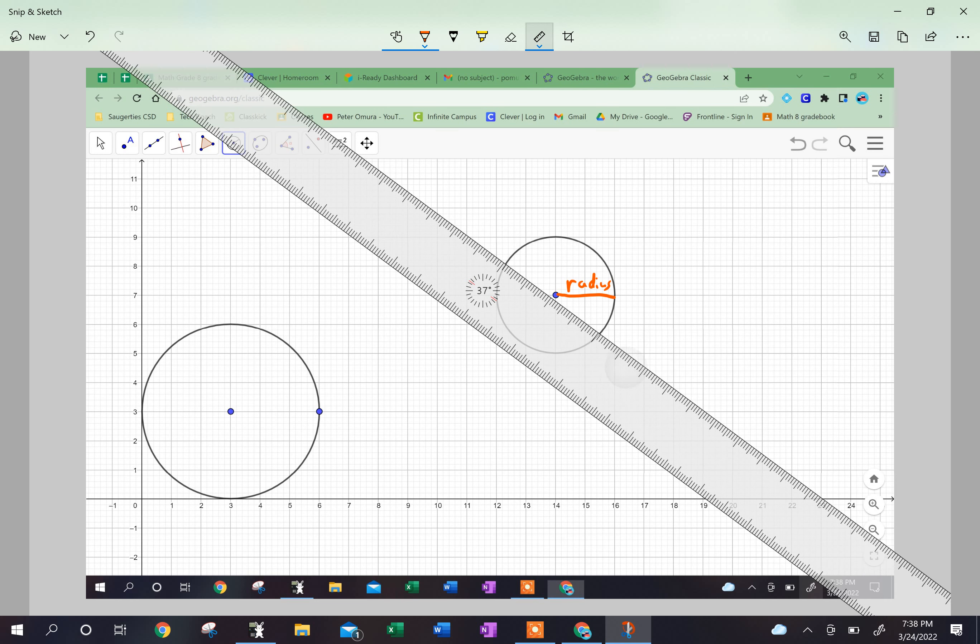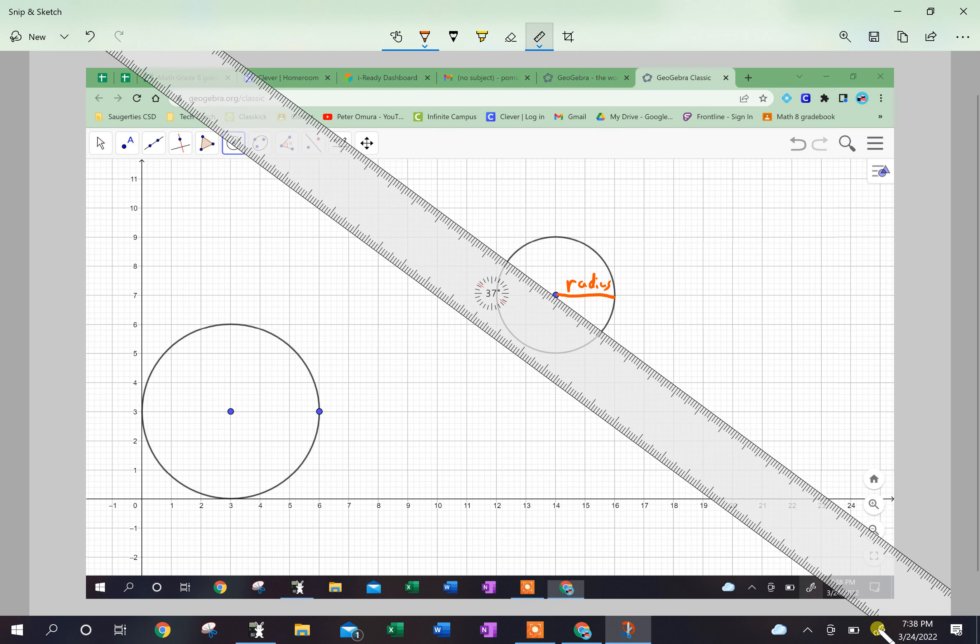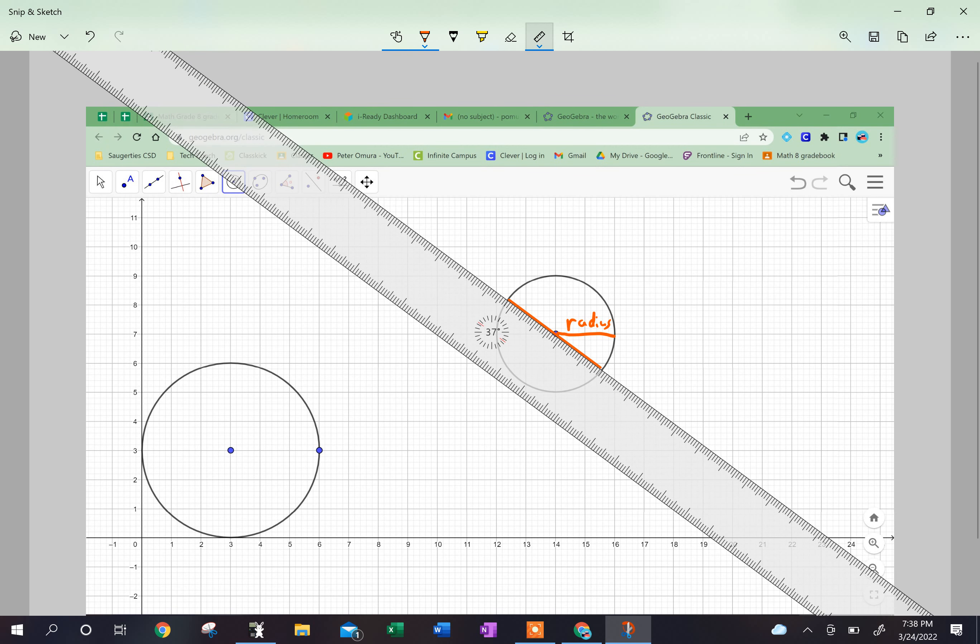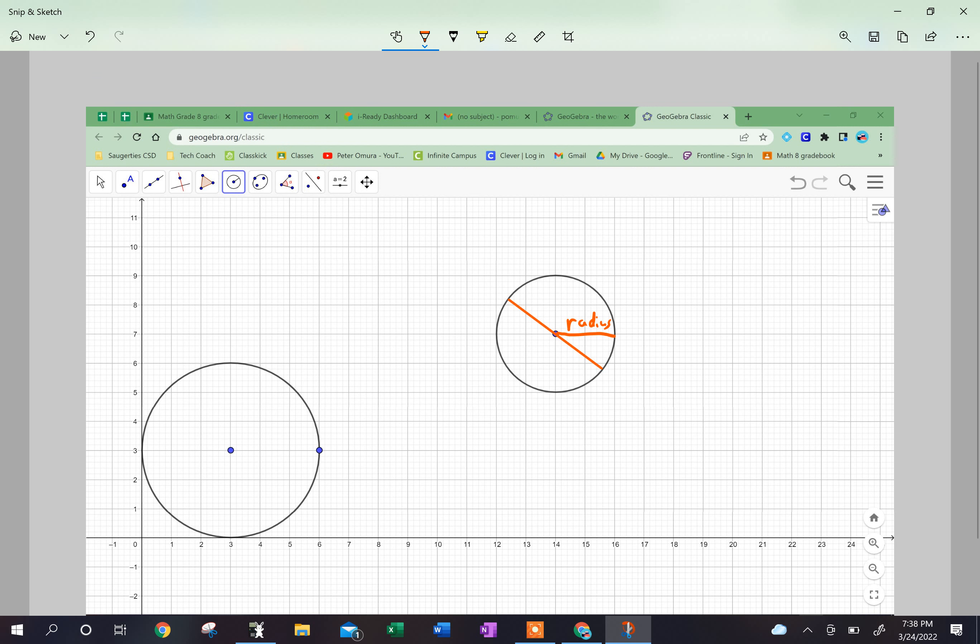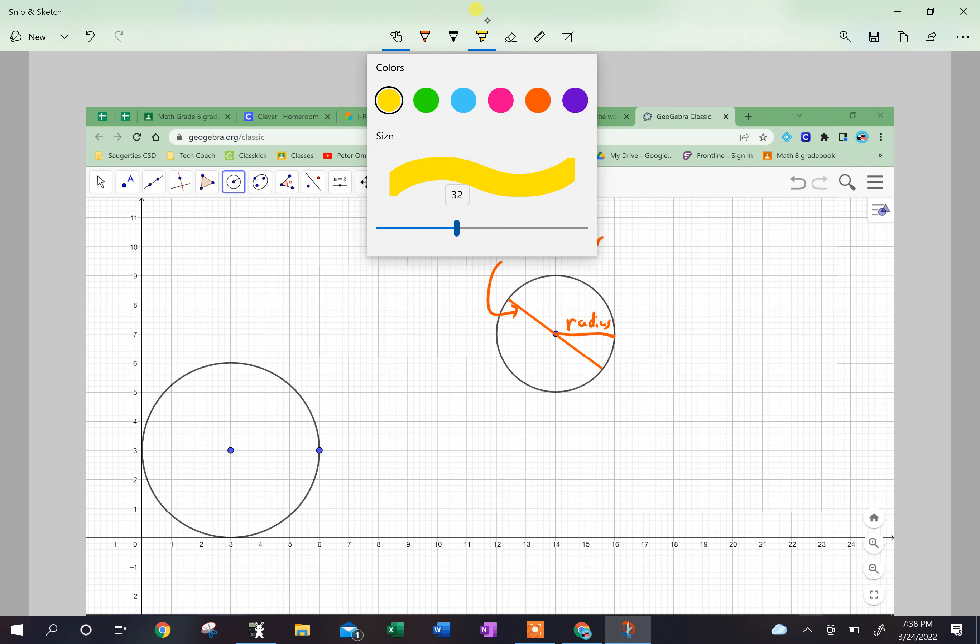So to find the diameter, what we do is we go from one side of the circle to the other side of the circle, and that's called our diameter. It's spelled D-I-A-M-E-T-E-R.